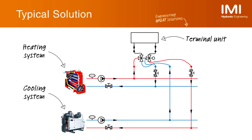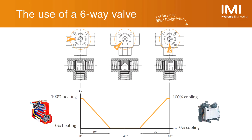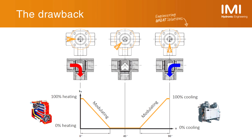Nowadays, a typical solution for changeover systems involves a six-way valve with its own actuator. The six-way valve is used both for switching the terminal unit from the heating to the cooling network and vice versa, as well as to modulate the flow. The drawback is that the six-way valve has to be able to control the flow in a stable and accurate way, allocating a part of its opening to heating and a part to cooling — typically 30 degrees of opening to each.